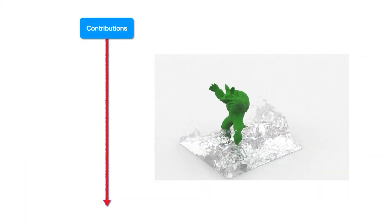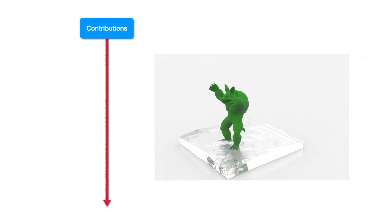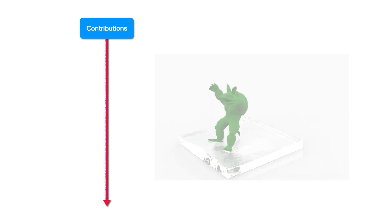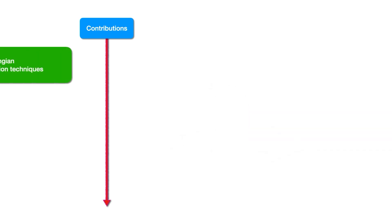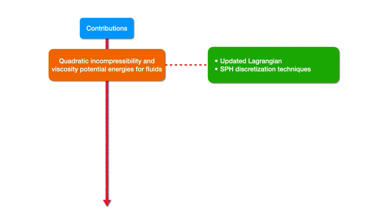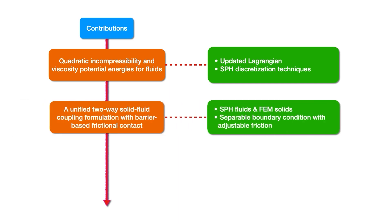We present a robust and efficient method for simulating Lagrangian solid-fluid coupling based on a new operator splitting strategy. We design quadratic incompressibility and viscosity potential energies for fluids based on an updated Lagrangian update rule and SPH discretization techniques. We then propose a unified two-way coupling formulation with barrier-based frictional contact to couple SPH fluids with FEM solids. The separable boundary condition with adjustable friction is enforced with the penetration-free guarantee.